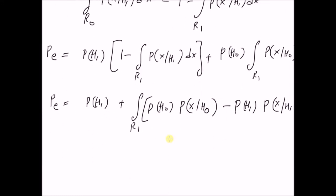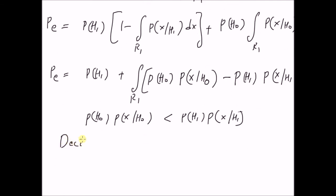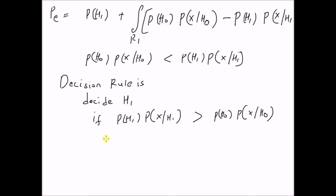The probability of error will be at its minimum when the integrand is negative, that is when P(H0)·P(X|H0) is less than P(H1)·P(X|H1). So the decision rule is: we decide in favor of H1 if P(H1)·P(X|H1) is greater than P(H0)·P(X|H0); otherwise, we decide in favor of H0.